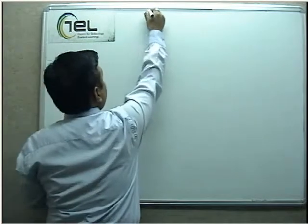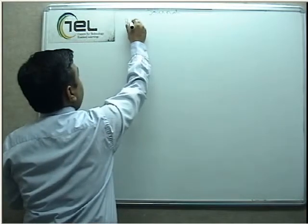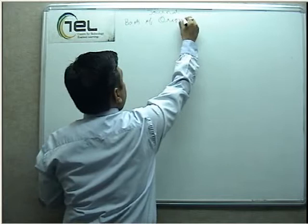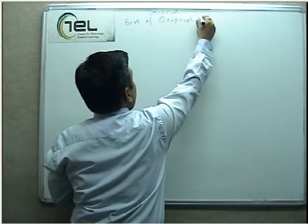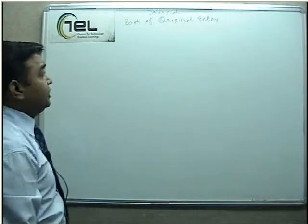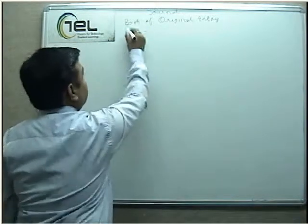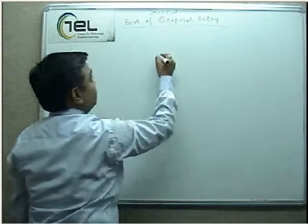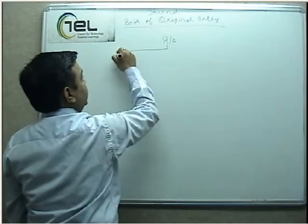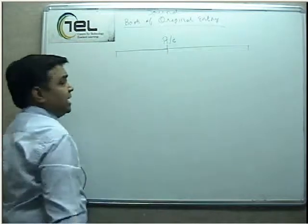Journal is more popularly known as the Book of Original Entry, because all the Financial Entries are first recorded in the Journal itself. For recording the entries in the books of Journal, we will be dividing all the Accounts into three parts. Accounts are of three types.